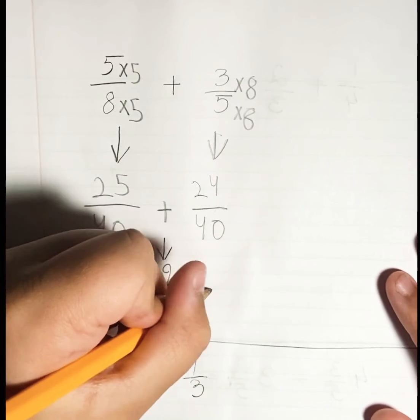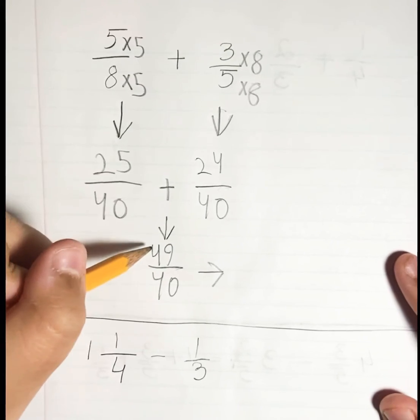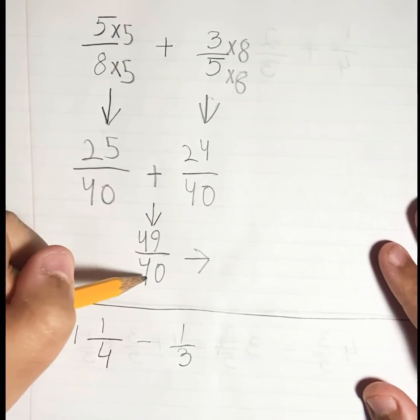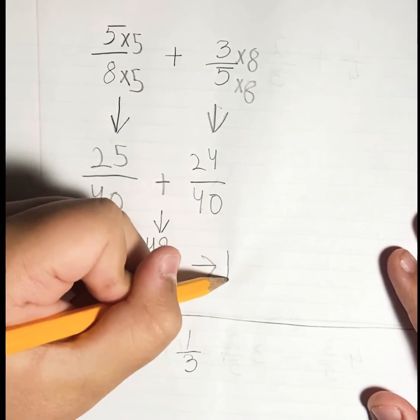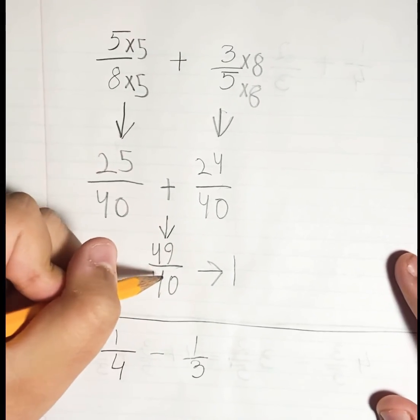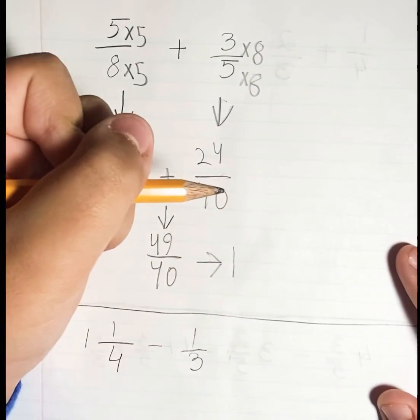So now I can see that this is an improper fraction because we have 49 over 40, so we have to simplify this. How many groups of 40 are in 49? So we put 1, and then we have 9/40 remaining. We can't make a group of 40 out of 9, so we're gonna write 9/40.